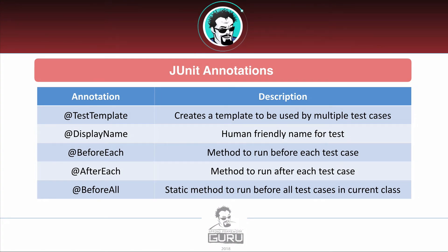@TestTemplate allows you to create test templates. @DisplayName is a really nice feature — the Spock guys have had this forever — where you can give a human-friendly test name, and now we have an annotation in JUnit to do that. @BeforeEach runs before each individual test case, and @AfterEach runs after each individual test case. @BeforeAll needs to be a static method and runs before all test cases in a class, while @AfterEach runs after each test method — an important distinction.